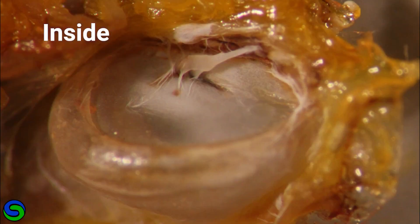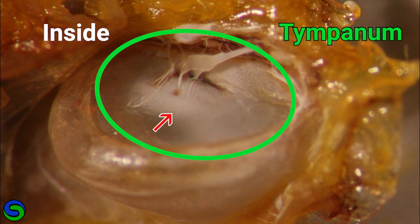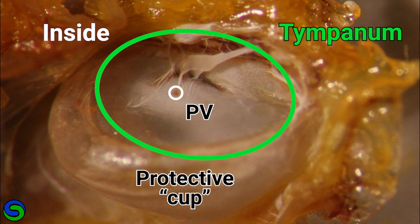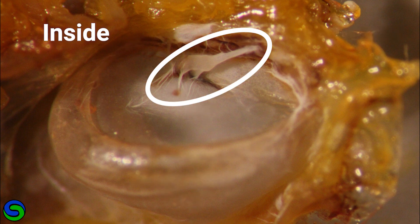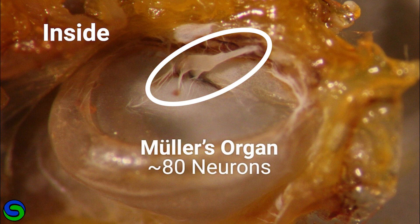This is a dissection showing the inside of the locust ear, circled as the tympanum, with a thin membrane next to the thick membrane. The brown PV is more clear in this image and that protective cup is now behind the membrane. But most obvious is this soft tissue mass directly touching the membrane. It is called Mueller's organ and is composed of about 80 neurons.